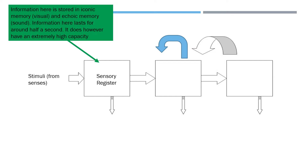The sensory register has an extremely high capacity — it takes every single thing in, but you only remember bits from your surroundings. Anything you've not paid full attention to is forgotten straight away. Something like the registration on a car number plate as it drives past you: your sensory register is taking it in, but you've not paid attention to it fully, so it's forgotten. You might remember the first bit if it's a funny word or combination, but your sensory register takes things in all of the time and the majority of it is forgotten.